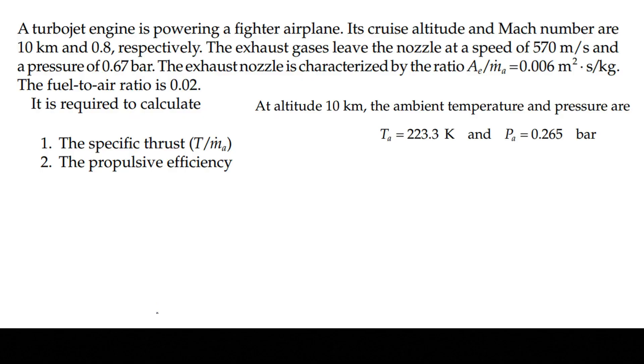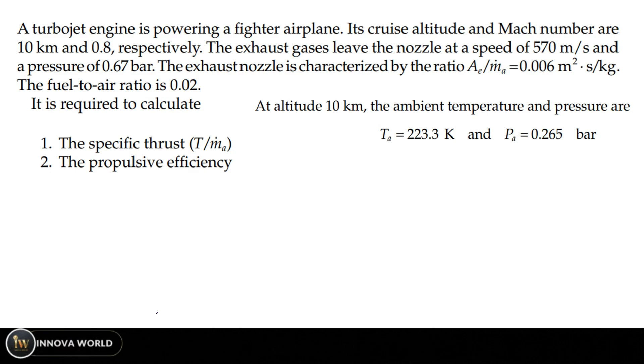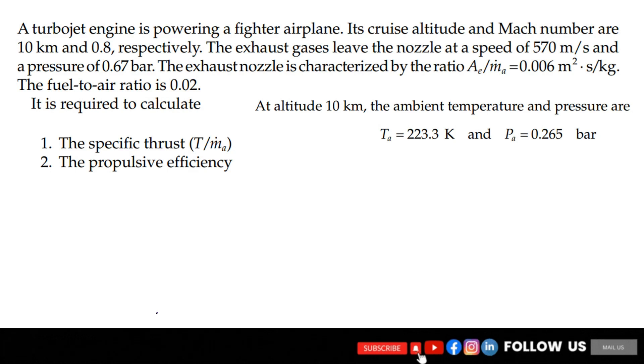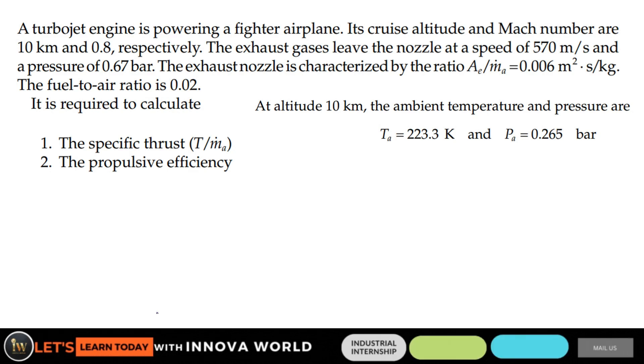We will start by brushing up with a simple problem on turbojet. A turbojet engine is powering a fighter airplane. Its cruise altitude and Mach number are 10 km and 0.8 respectively. The exhaust gases leave the nozzle at a speed of 570 m/s and pressure of 0.67 bar.